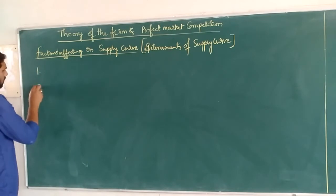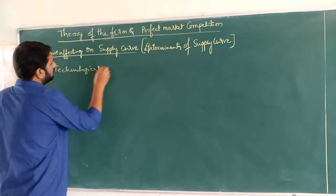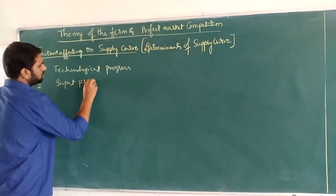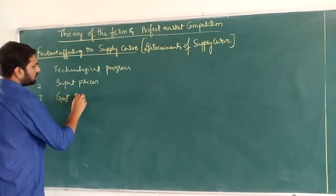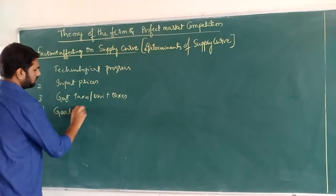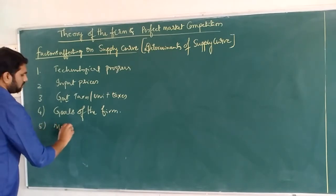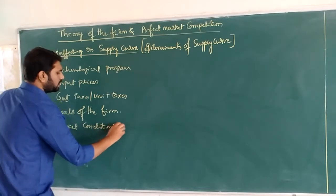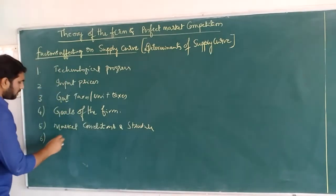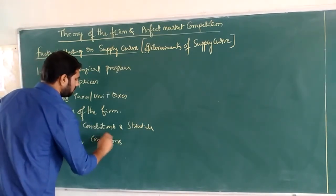We have already listed these factors and we will have a discussion about each one. The first one is technological progress. The second one is input prices, government taxes or unit taxes, goals of the firm, and market conditions and structure.